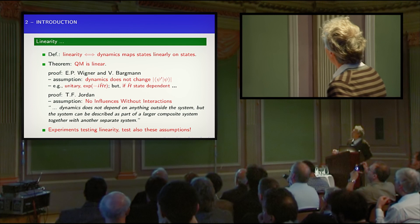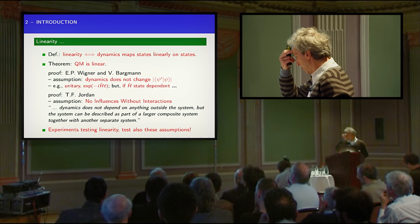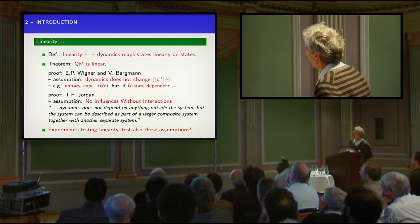The assumption there is that the dynamics does not change the overlap of states, and of course we know that the unitary evolution is an example which does that. But if the Hamiltonian is depending on the state, then of course immediately you leave this scenario and things become nonlinear, and there have been attempts to go in this direction, but this is not my topic here.